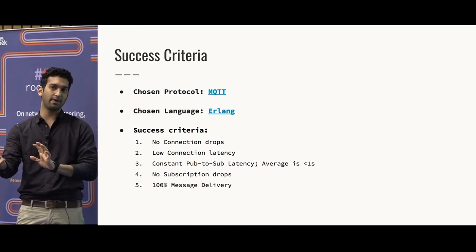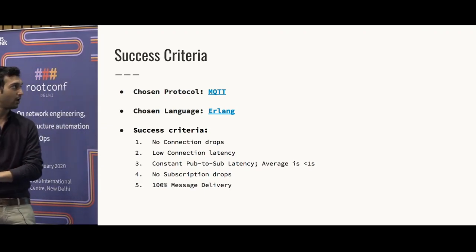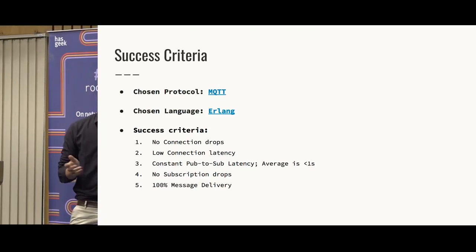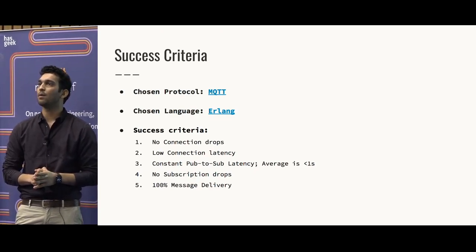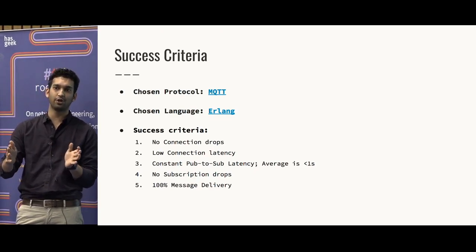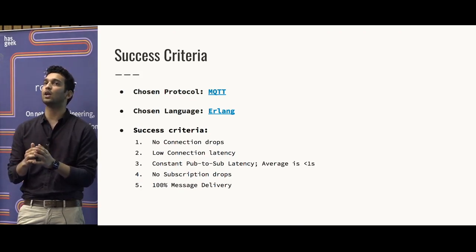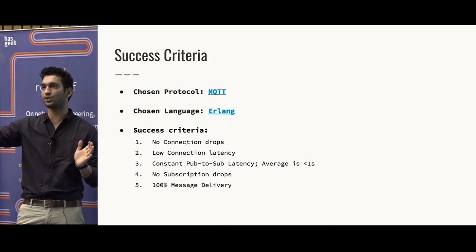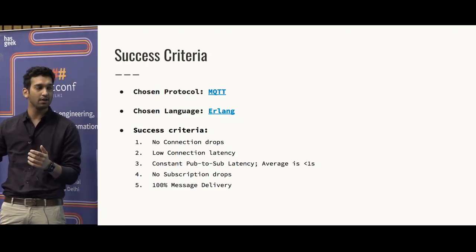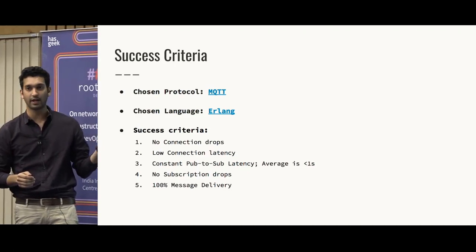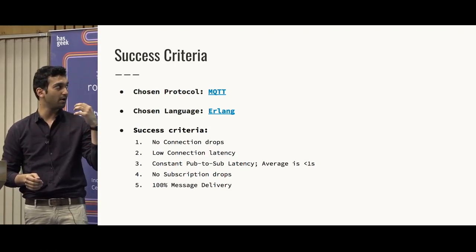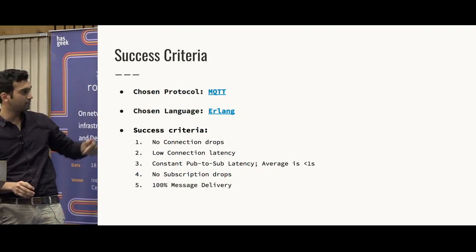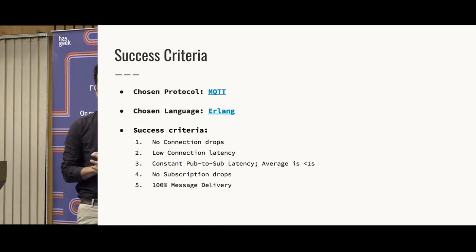There are other PubSub solutions available — Redis implements its own PubSub, Kafka has its own PubSub — but we chose MQTT. The language we chose was Erlang. The choice came from one of my teammates because Erlang is a language built for distributed, fault-tolerant systems at scale. If you have a service that's going to scale to huge peak numbers like 25 to 50 million, Erlang is a really good choice. EMQ was the combination that implemented MQTT as a protocol in Erlang.